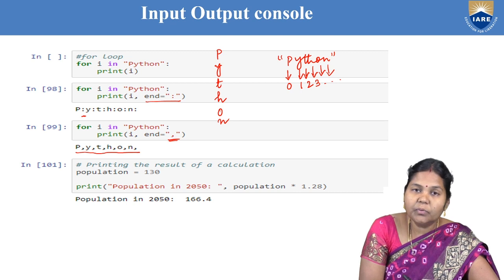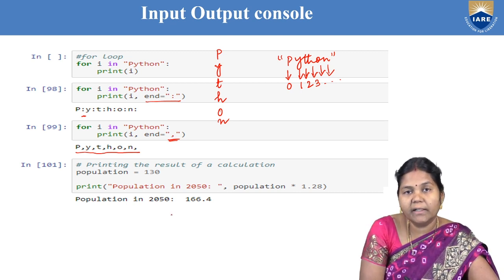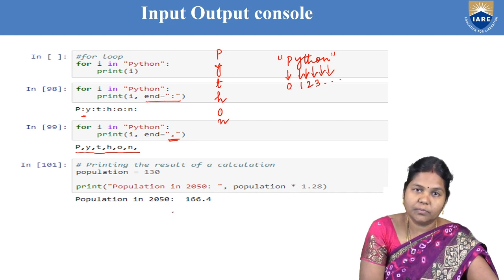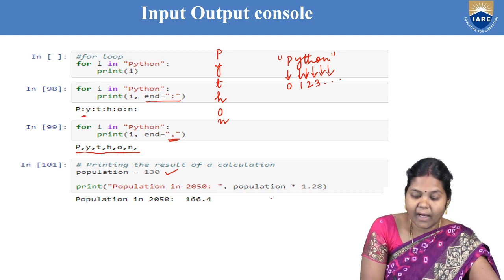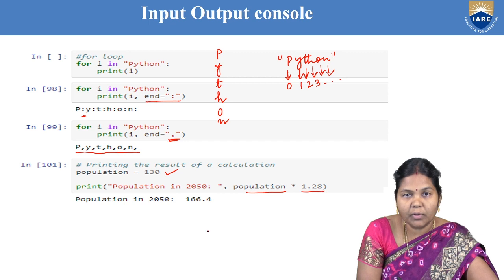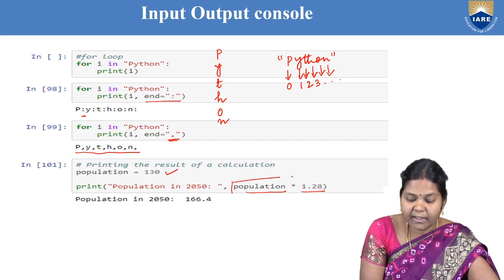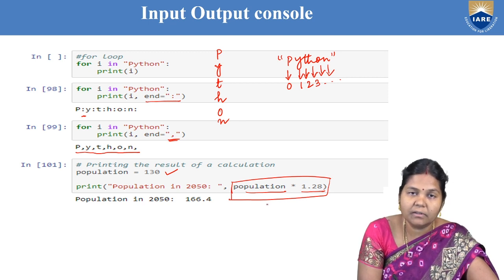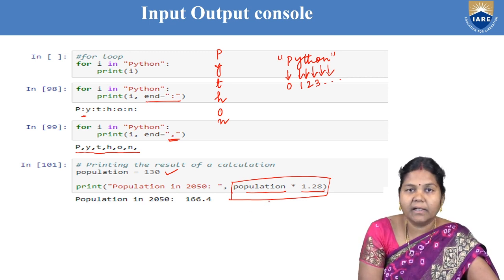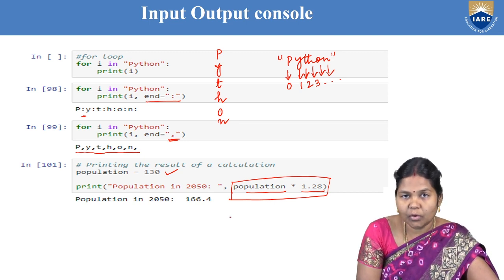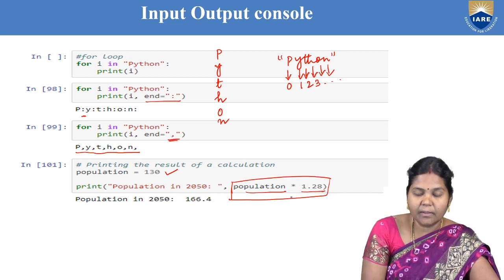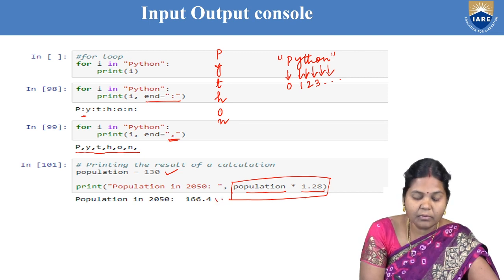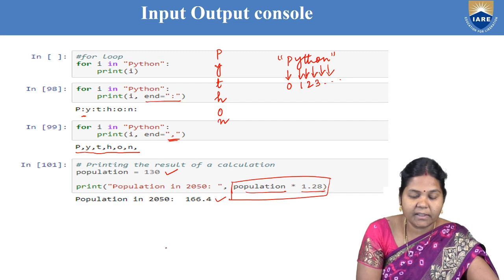If you want to do any mathematical calculation or write a big expression in the print statement, that is also possible. For example, the value of population is 130. I want to calculate the population in 2050, so I multiply population by a factor of 1.28. This expression will be evaluated first and then its final value will be printed. Expressions are allowed in the print statement.